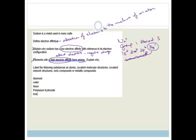Now it says label the following substances as atoms, covalent molecular structures, covalent network structures, ionic compounds, and metallic compounds. This is pure study, kids. Let's go through it. First of all, let's find the atom, and that's obviously an atom here, neon, because it's a noble gas.